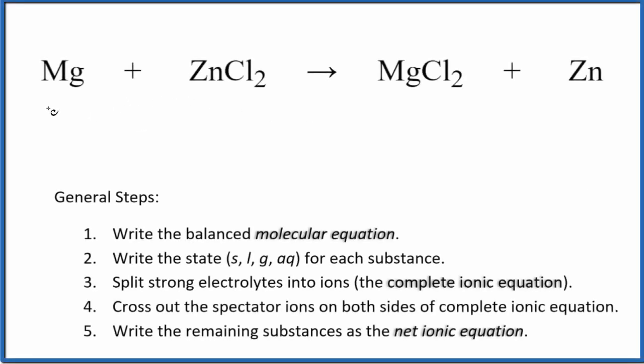Let's balance the net ionic equation for Mg plus ZnCl2, magnesium and zinc chloride. The first thing we need to do when writing net ionic equations is balance the molecular equation. In this case, it's already balanced, so that's all good.